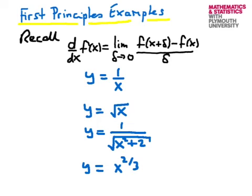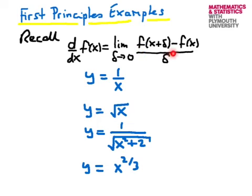We take each function in turn, substitute into the definition, and evaluate the function at x plus delta, then subtract it evaluated at x. We can't immediately set delta to zero because of the delta in the denominator. So we have to manipulate the difference to extract a power of delta to cancel the denominator, and then safely take the limit as delta goes to zero.